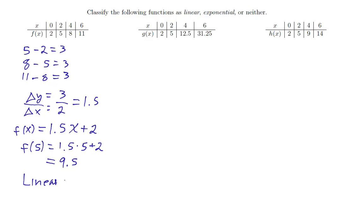However, let's look at what happens when we look at ratios between terms instead of differences. 5 over 2 is the same as 12.5 over 5 and that's the same as 31.25 divided by 12.5. They're all 2.5.